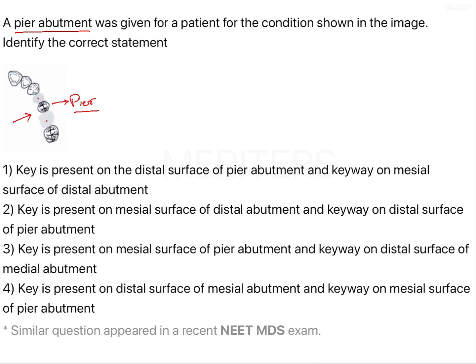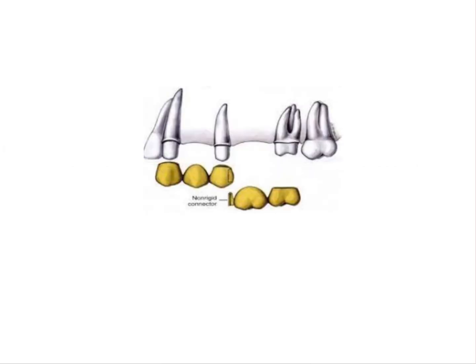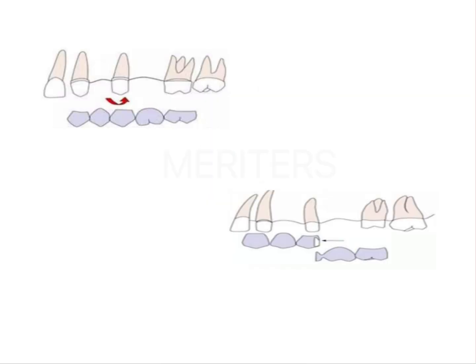Now let us understand what problems we face with the pier abutment. If you try restoring the two edentulous spaces next to your pier abutment with a single five-unit FPD, under occlusal stresses there might be forces acting on the pier abutment which will make it act as a fulcrum. This fulcrum action may cause damage to the anterior-most abutment — dislodging of the retainer, secondary caries, or intrusion of the abutment. So it is not good practice to give such long-span bridges with a rigid connection.